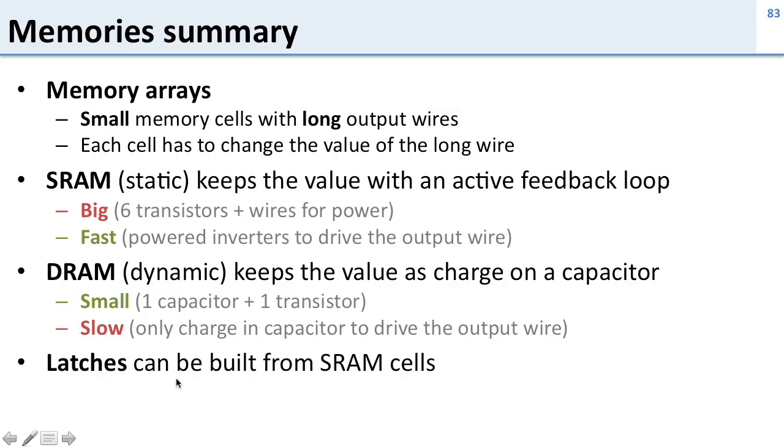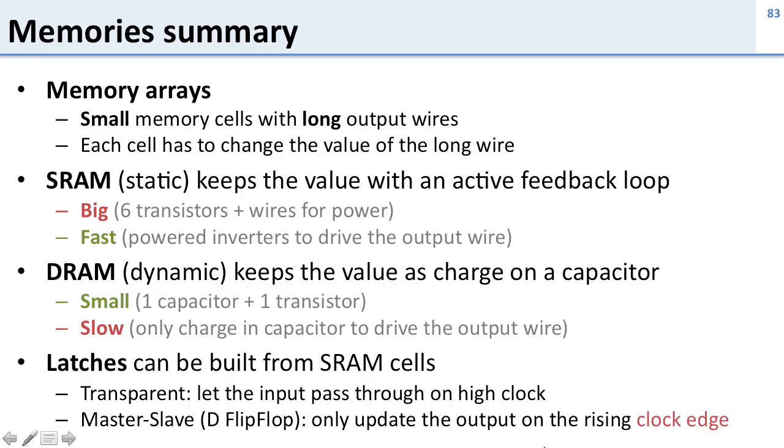The other memory we talked about are latches. We talked about how you can use SRAM cells to build them, and about how transparent latches let the input pass through on the high clock, and how that can lead to feedback. But then we solved that with the master-slave, or D flip-flop, that only updates the value when the clock signal comes in. We did that by putting together two of the transparent latches.